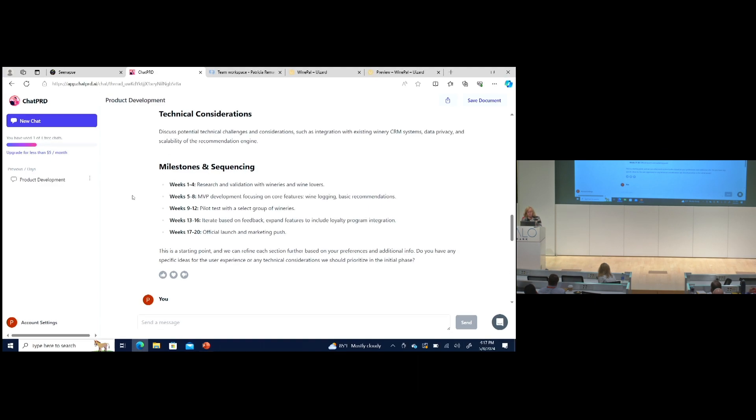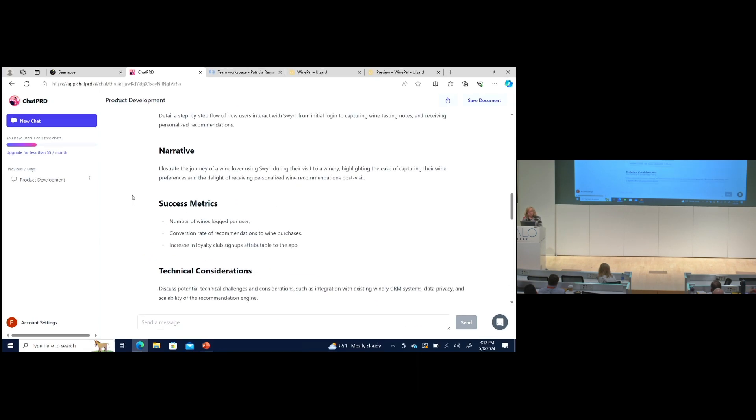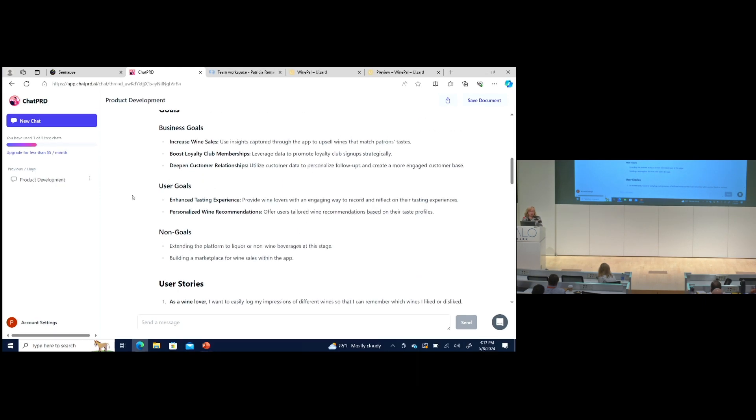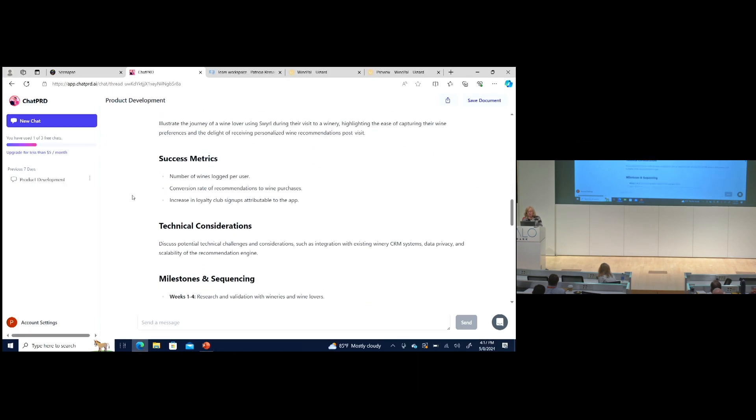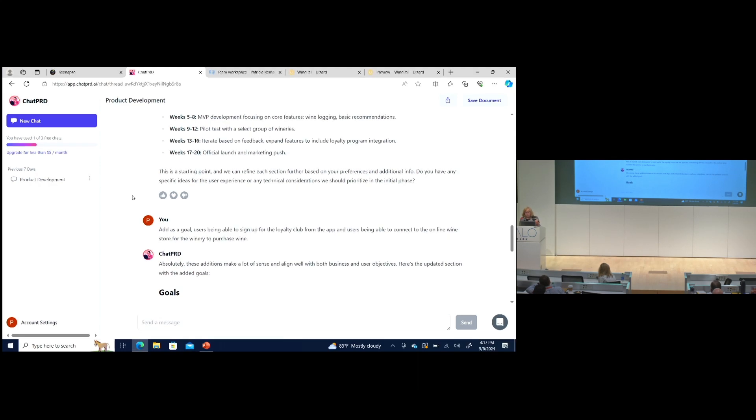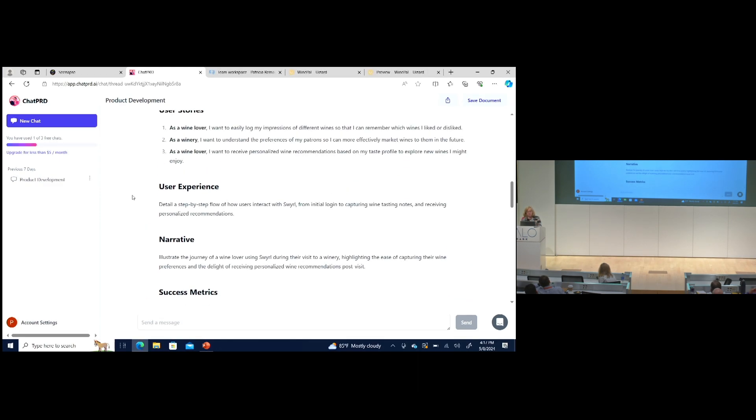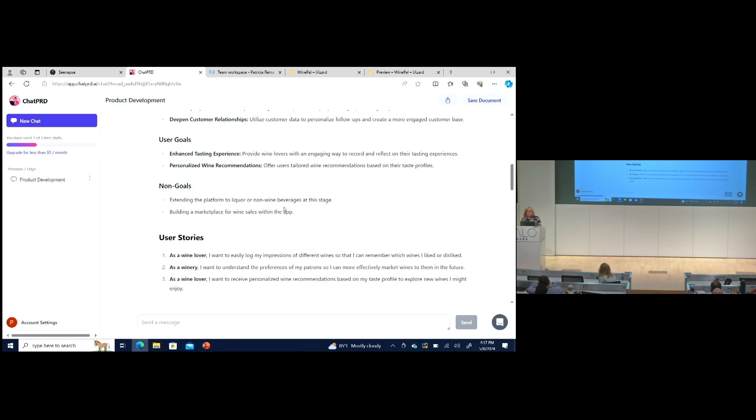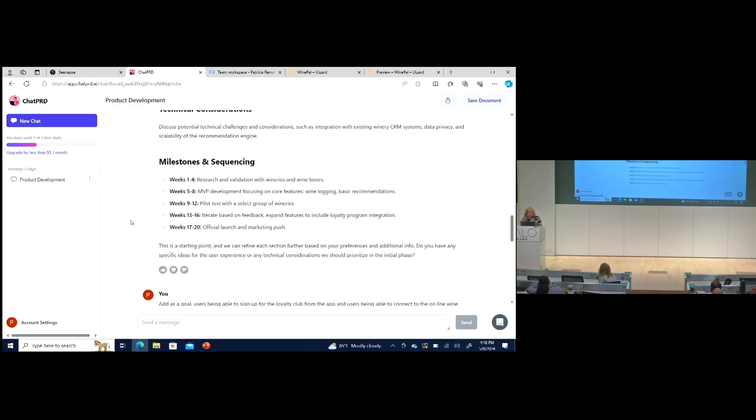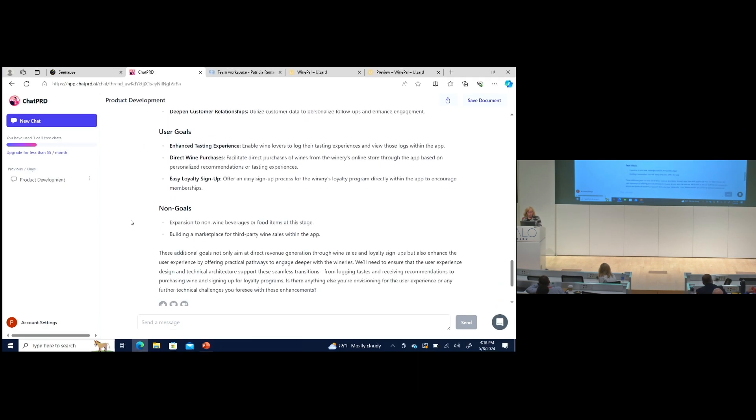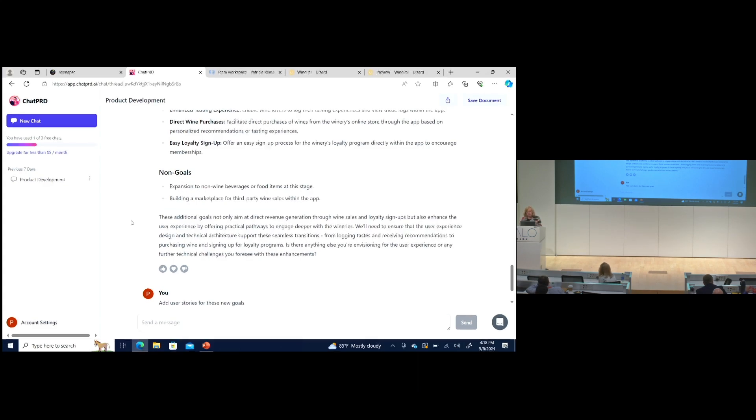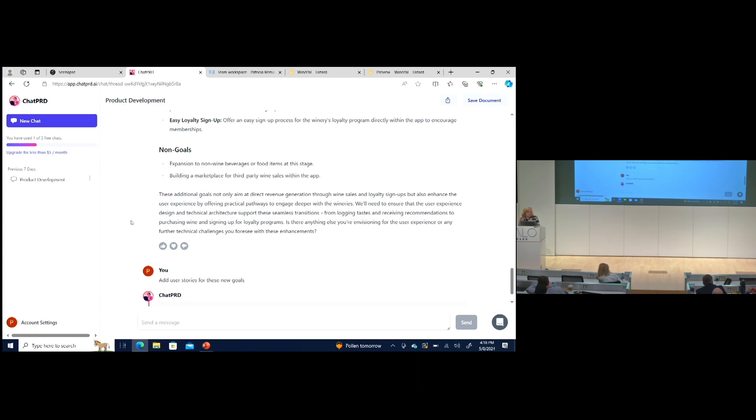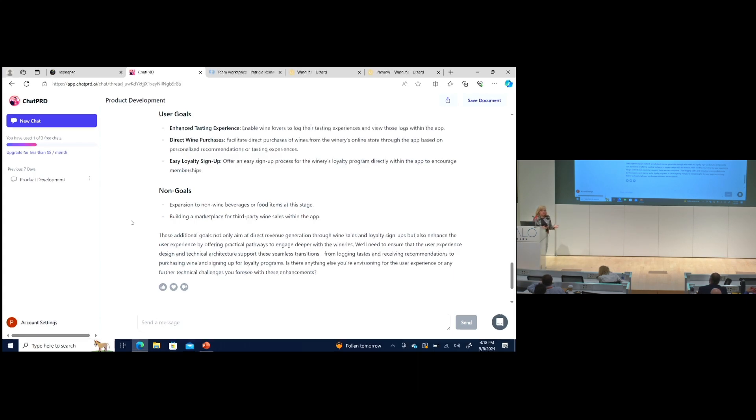But then you can say I looked at the goals, and I told you that one of the goals was, I looked at the goals and said add a goal for the user being able to sign up for the loyalty club from the app and the users being able to connect to the wine store for the winery to purchase wine. Because it said that building a marketplace for wine sales within the app was a non-goal, and I'm like no, I want that to be a goal. So it says sure and goes through and revises the goals. It even says these additional goals not only aim to direct revenue generation, but here are some technical considerations you need to think about. It's very conversational and you can use this to build out your PRD very easily and very quickly.